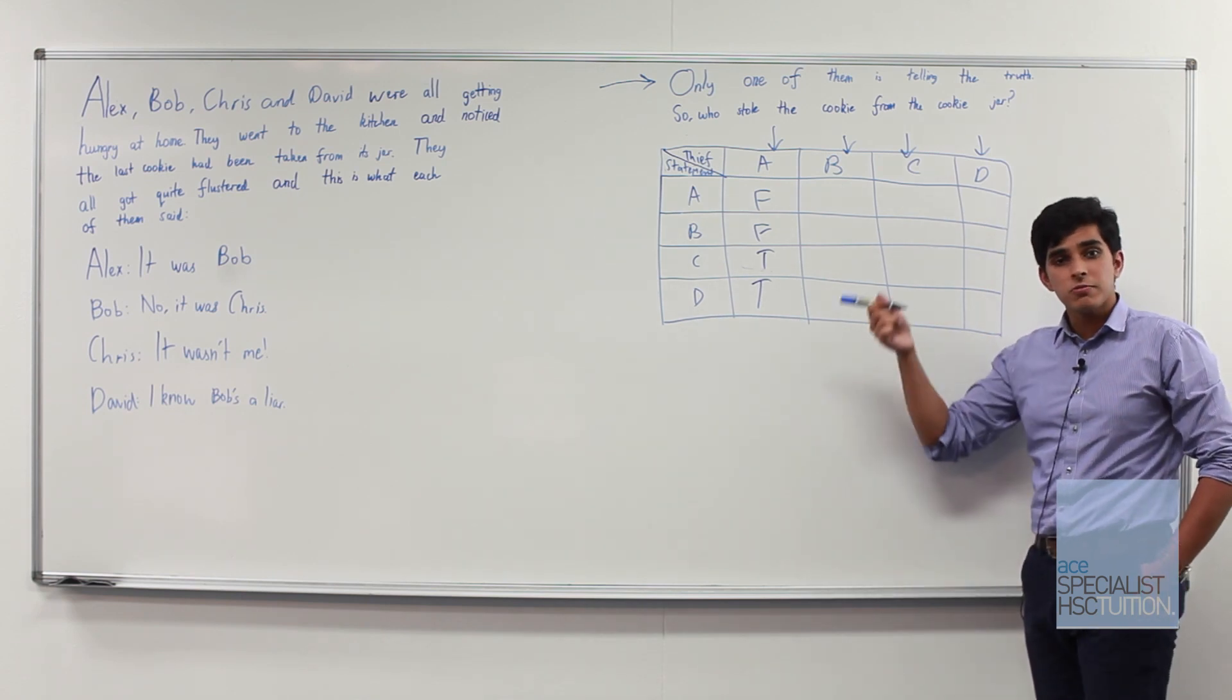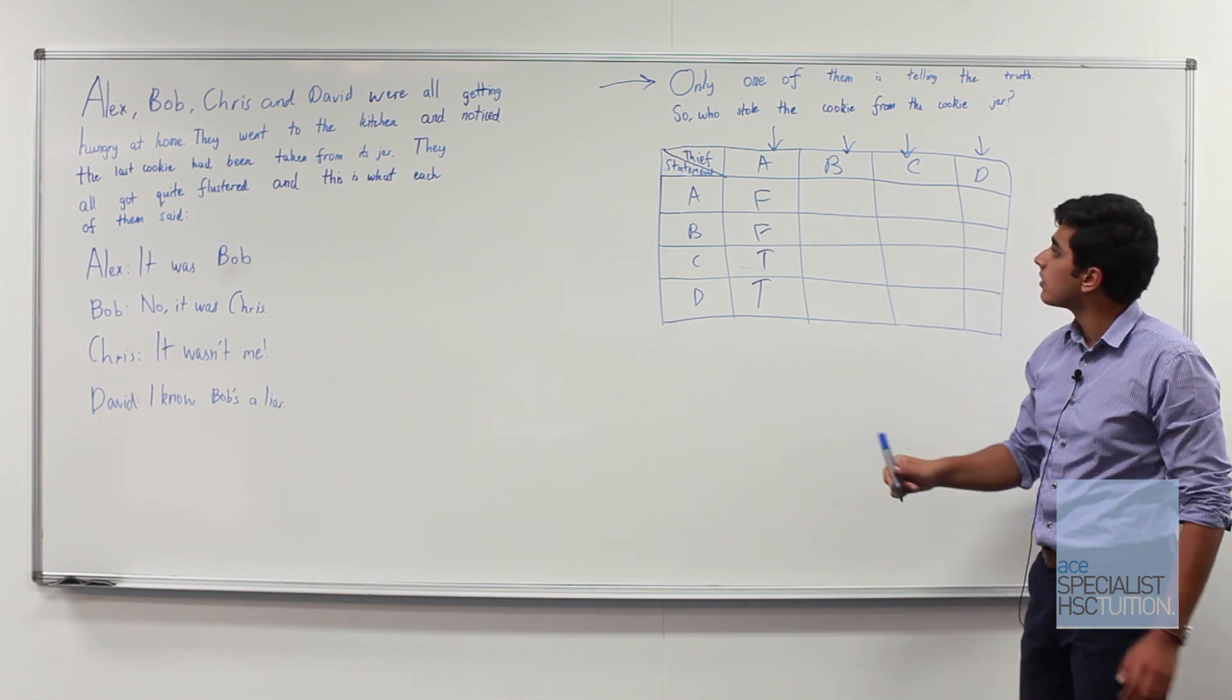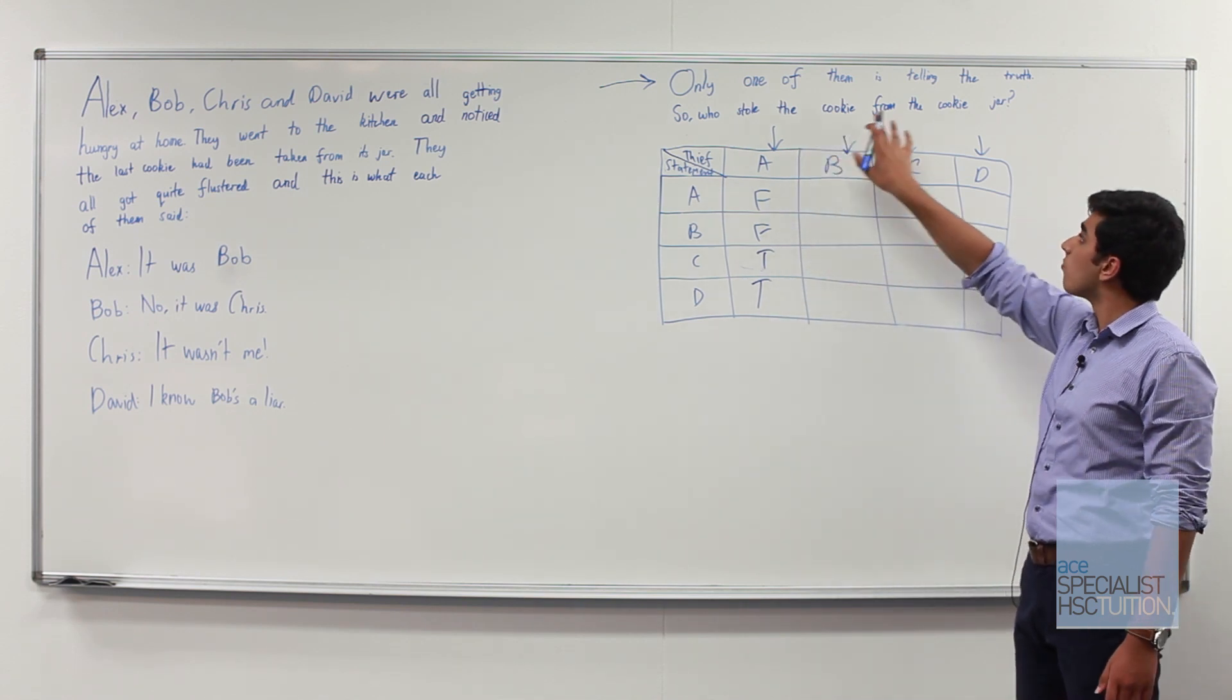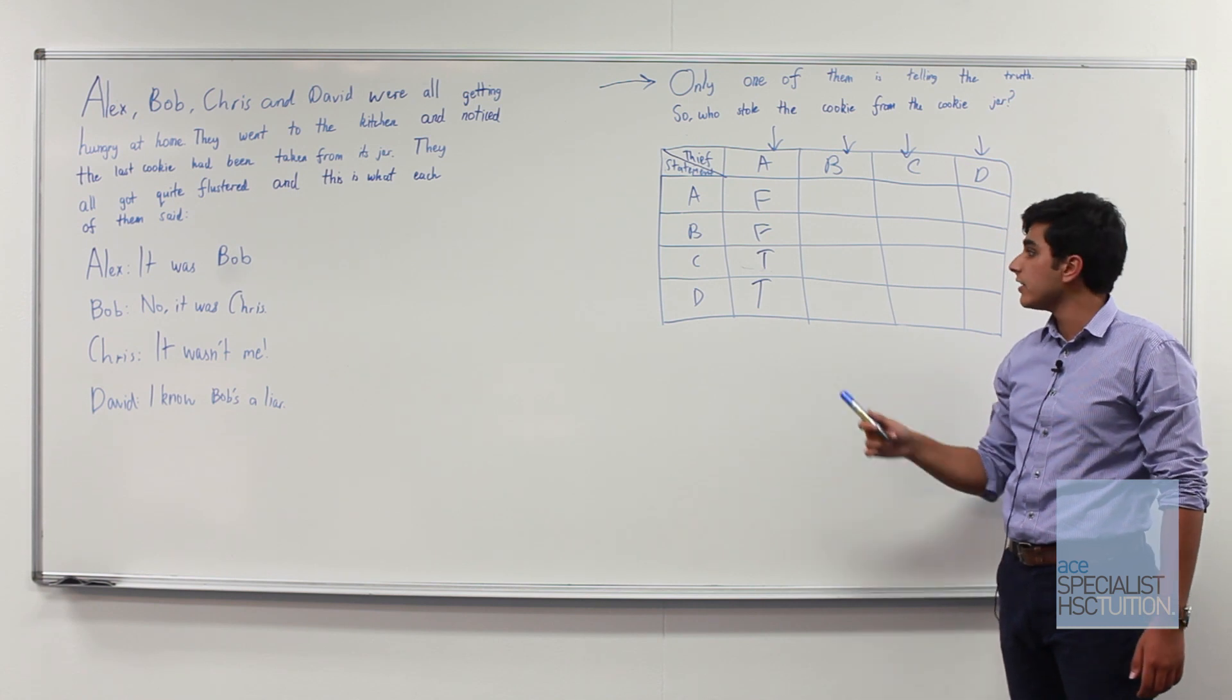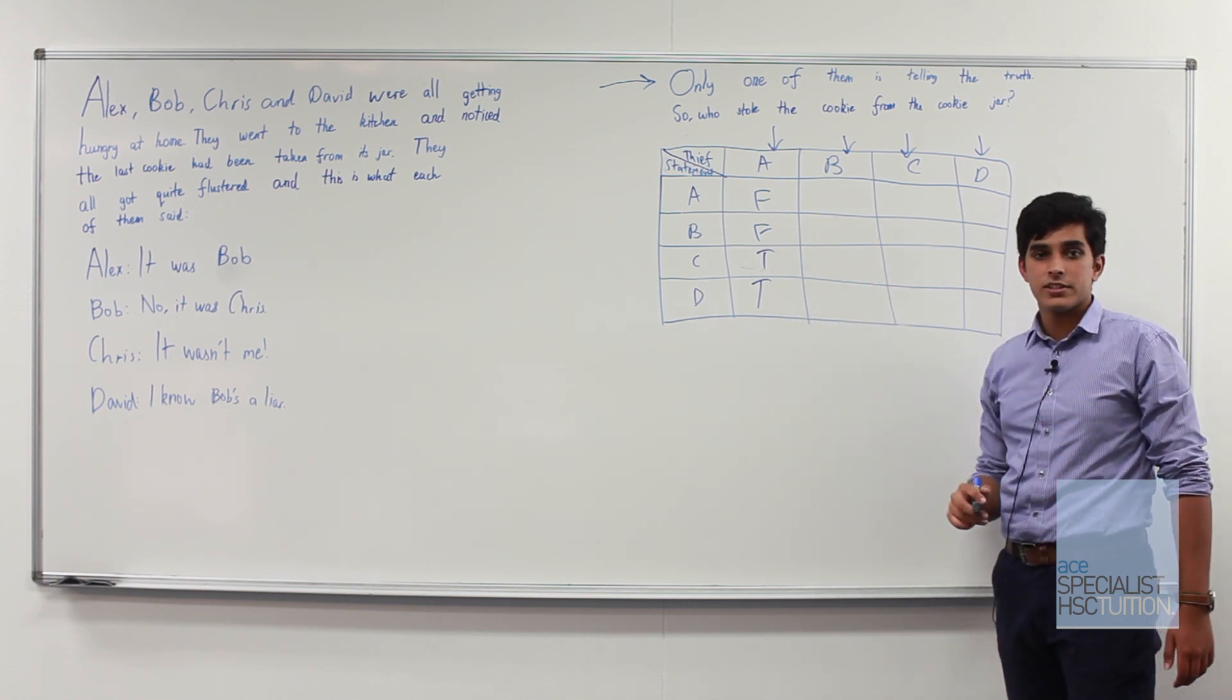So what we do is once we've finished our case we're going to compare it with our rule and see if it fits. Our rule is that only one of them is telling the truth and clearly here we have two people telling the truth so A did not steal the cookie.